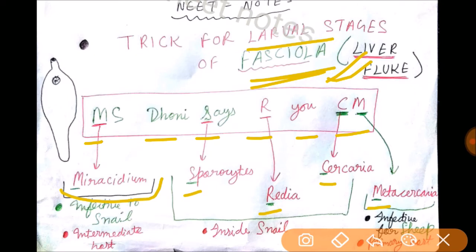Now let's see the details of different stages. Miracidium is infective to snails. This is the intermediate host or secondary host, which is an immature form. From sporocyst to cercaria, all are found inside the snail.